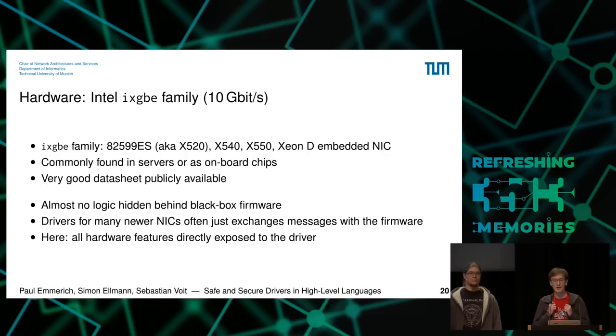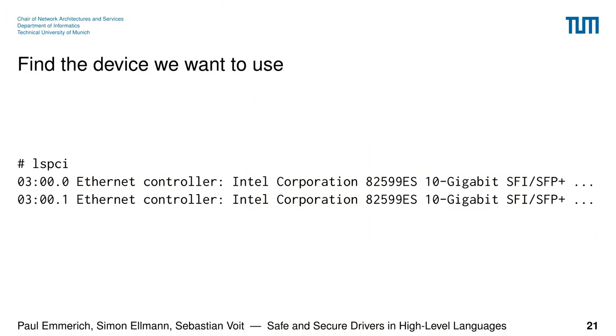This network card is about 10 years old and has a nice property: it's still very low-level compared to newer network cards. On newer cards you're usually just exchanging messages with firmware, which is boring because the firmware implements everything. With the older card you get much more low-level access and feel like you're implementing an actual driver yourself. I'll now hand over to Sebastian, who will show some C code about how to write a driver and whether it could be done in a high-level language.